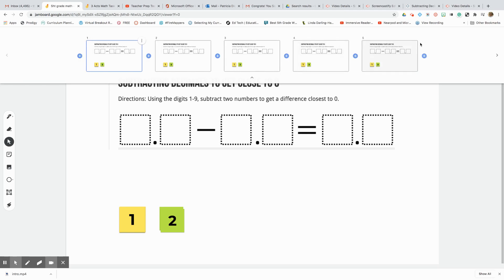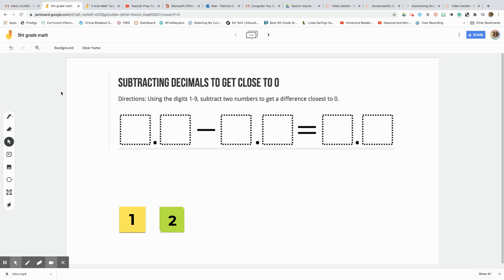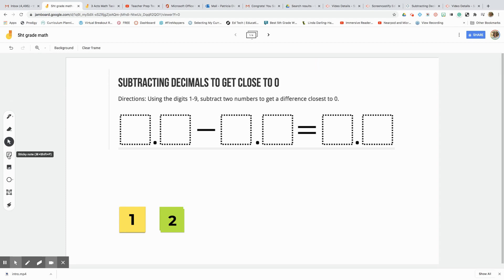Either independently, in a small group, or in pairs. And then if I want to already have this ready to go for my kiddos, I might just add their names at the top. Let's say I want to have them working in partners and I don't want them to just randomly pick which slide they're on.